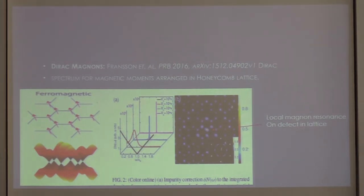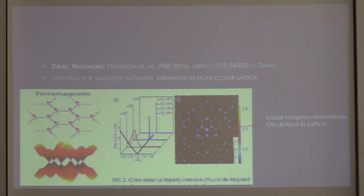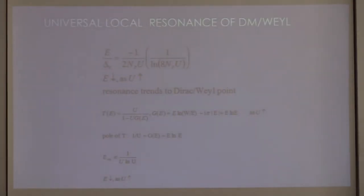Going ahead: if I put bosons on the honeycomb lattice I will produce a Dirac dispersion for bosons — Dirac bosons. In this context, if I have ferromagnets living on the honeycomb lattice with an effective Dirac dispersion for magnons, then when you put a defect there you will have a localized magnon state — a localized defect that looks very similar to the others. The impurity resonance scales inversely with the potential strength, and this is a unique feature of Dirac and Weyl materials.